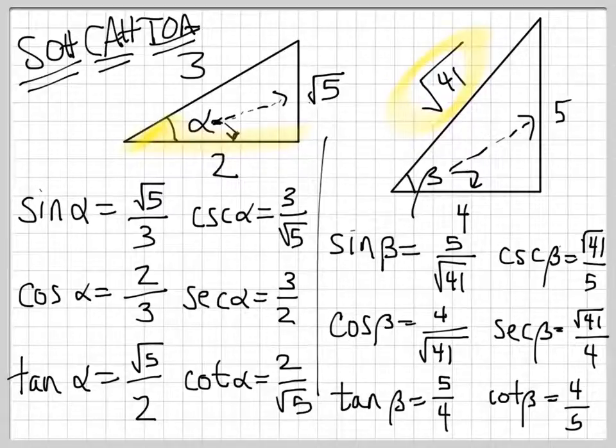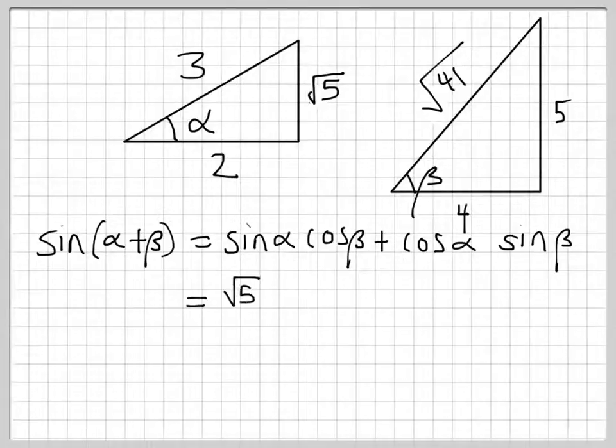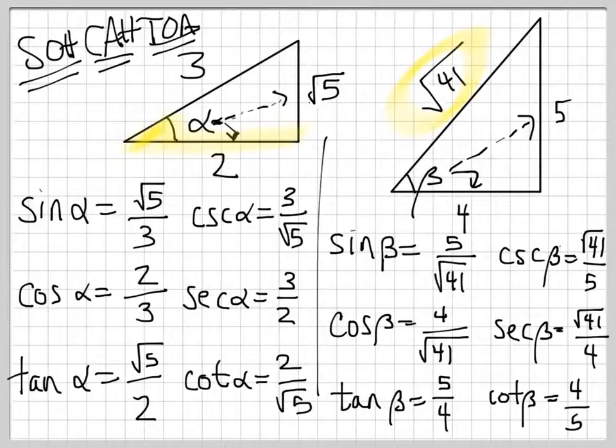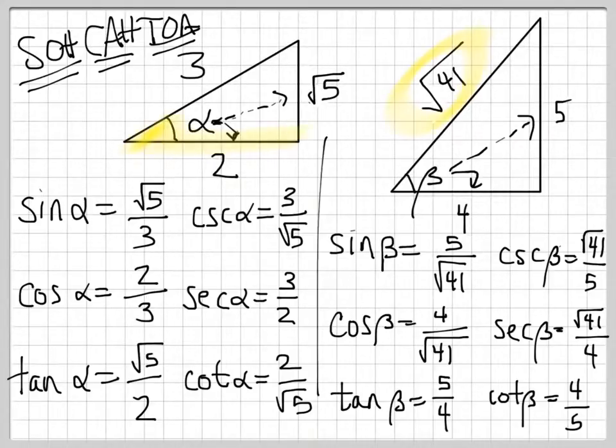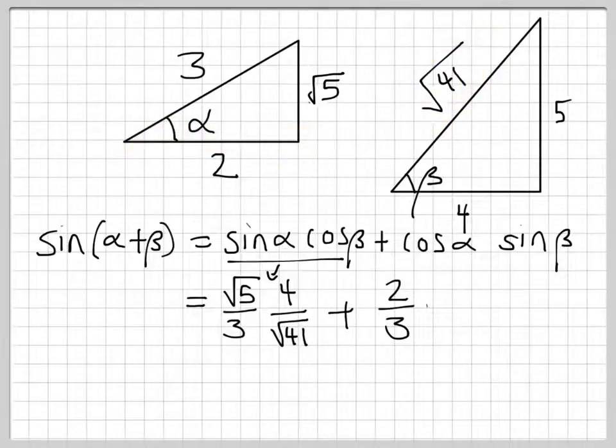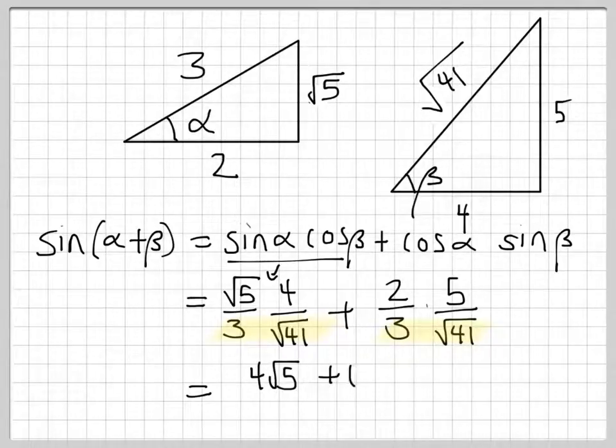Sine of alpha is radical 5 over 3. And so you just write radical 5 over 3. Cosine of beta is 4 over radical 41. And we've got it. That's half of that. We need cosine of alpha now, which is 2 thirds. And sine of beta, which is 5 over radical 41. And you can see that the bottoms are both 3 radical 41, which is good for us. And so the answer we're going to get is 4 radical 5 plus 10 over 3 radical 41.